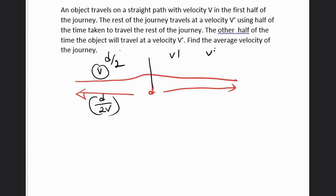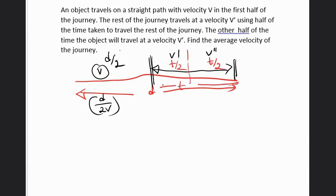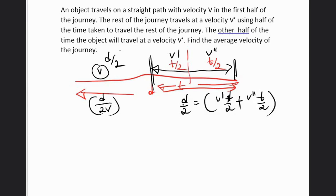For the rest of the journey, this is the interesting part — they are telling us V' and V''. The time taken for these two velocities is half of the total time for the last half. Let's assume the total time taken for this journey is T. Then time for V' is T/2 and for V'' is T/2. So D/2 equals V' into T/2 plus V'' into T/2 — that covers the other half of the journey.